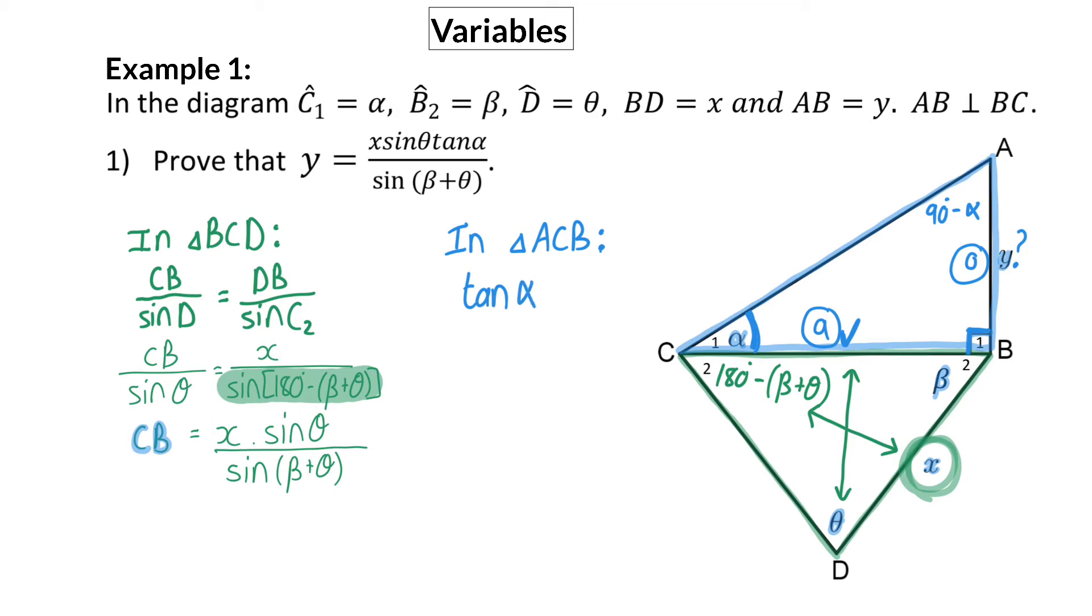So here, the tan ratio for angle alpha is the opposite side, which is y, divided by the adjacent side, which is CB. And to solve side y, I'm going to multiply with CB on the left-hand side. My final step is then to substitute CB with the value that we calculated earlier for CB. Once you've done this, you've finalized the proof that they have asked you to do.